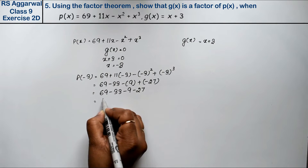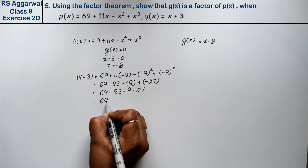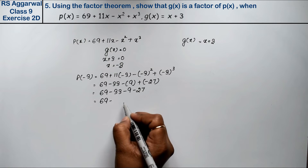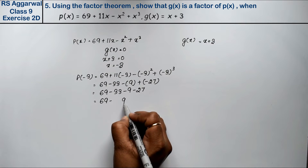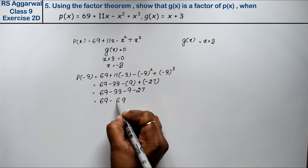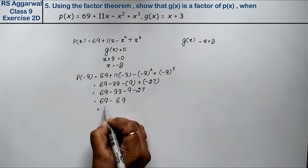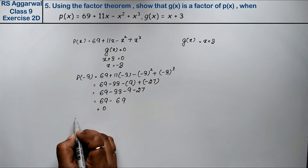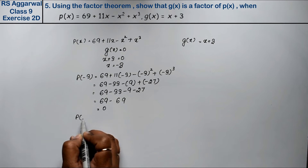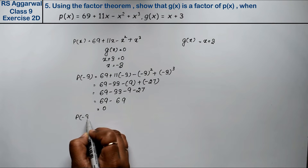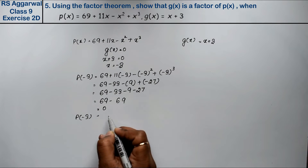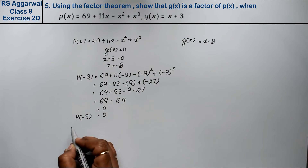Adding all the values: the minus values combined give us zero. So p(minus 3) equals zero.